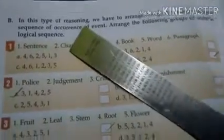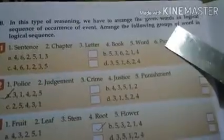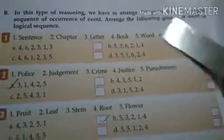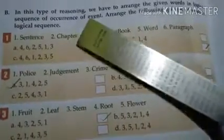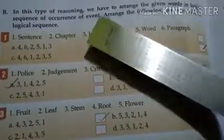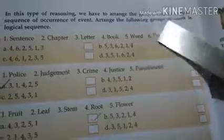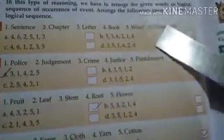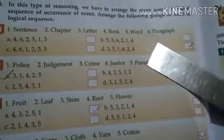In this type of reasoning, we have to arrange the given words in a logical sequence of occurrence of an event. Arrange the following group of words in logical sequence: sentence, chapter, letter, book, word, paragraph. The answer will be D.